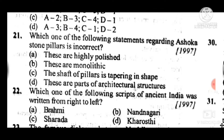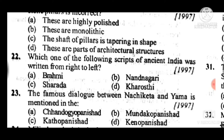Question 23: The famous dialogue between Nachiketa and Yama is mentioned in — the answer is C, Kathopanishad.